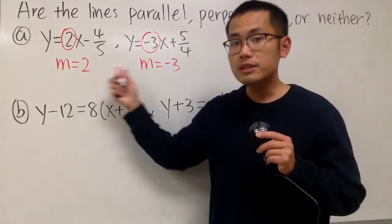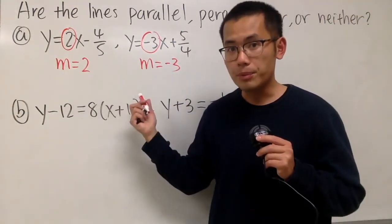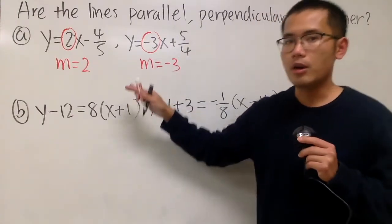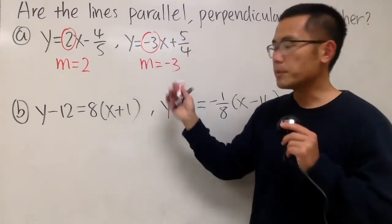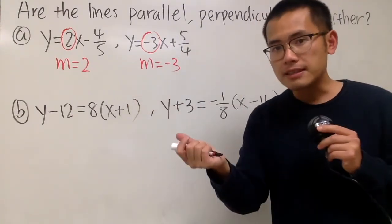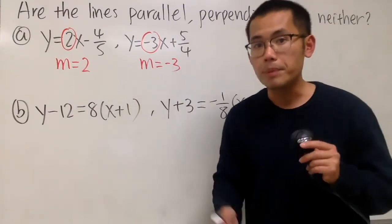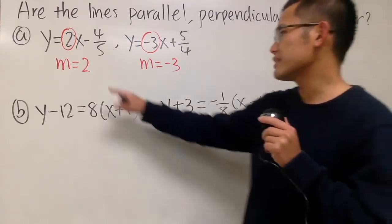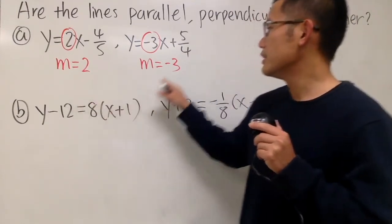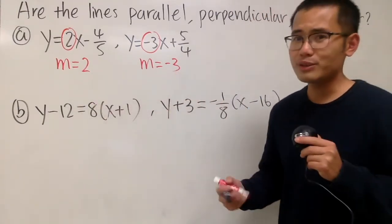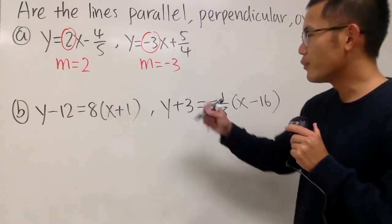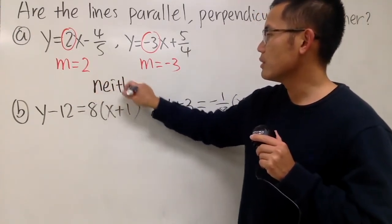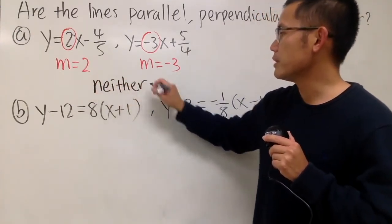We'll just compare the slopes. If the slopes are the same, then the lines will be parallel. If the slopes are opposite sign and reciprocal, then they will be perpendicular. But in this case, one slope is 2 and the other is negative 3 — no connection. Therefore, these two lines are neither parallel nor perpendicular.